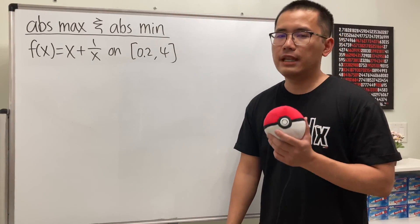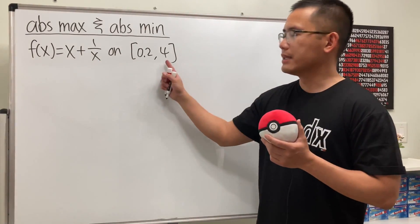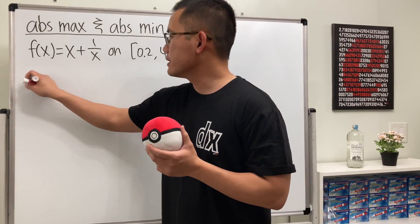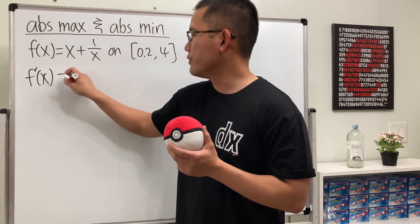We are going to find the absolute max and also the absolute min for this function on this interval. So let's go ahead and get to work. We need the critical numbers first, so let's go ahead and get the derivative.